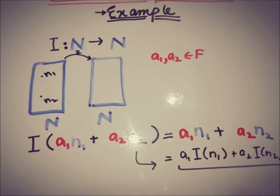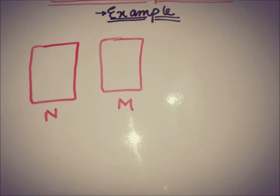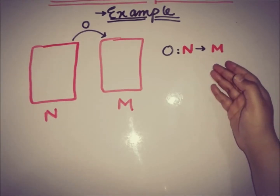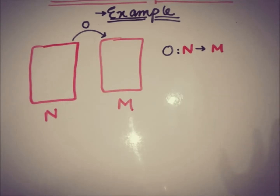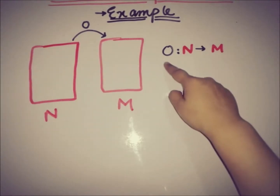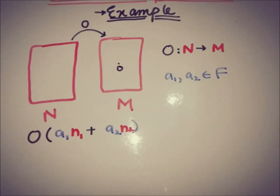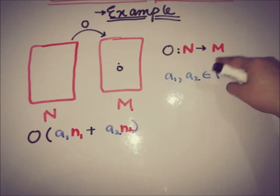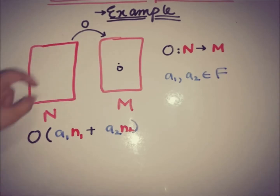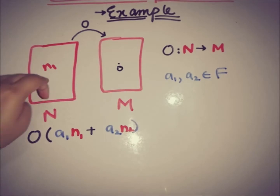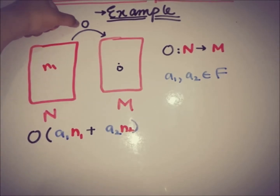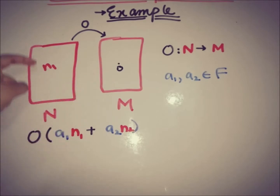Now moving toward another example. We have two linear topological spaces N and M, and a zero operator between N and M. We are going to check whether this is a linear operator or not. We take two elements from N and two elements from the field and apply the zero operator. The zero operator maps every element of N to zero, so the image of any n under this operator is zero.